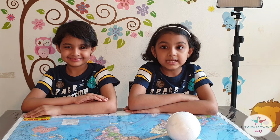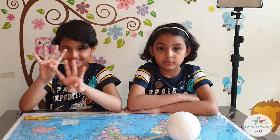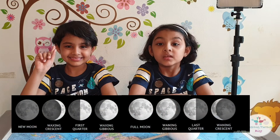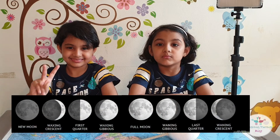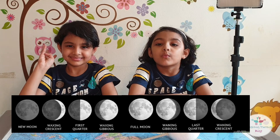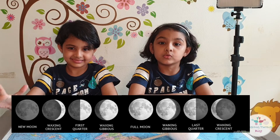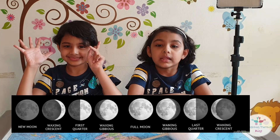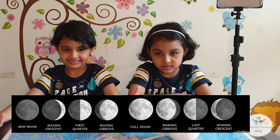So, to sum up, there are eight phases of the moon. They are: new moon, waxing crescent moon, first quarter moon, waxing gibbous moon, full moon, waning gibbous moon, last quarter moon, and waning crescent moon.